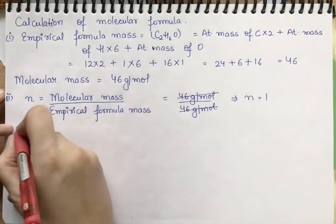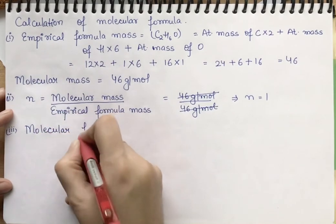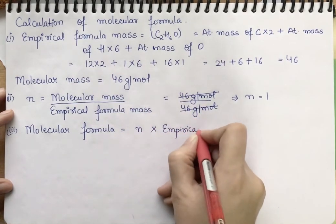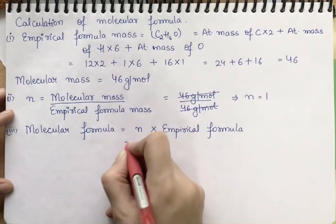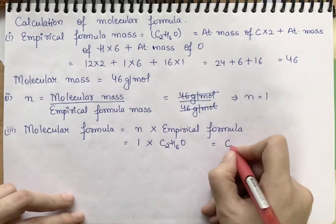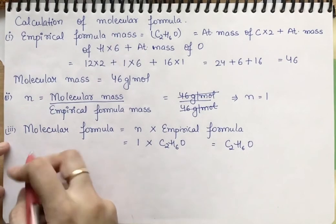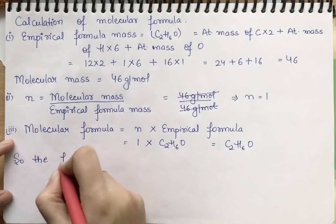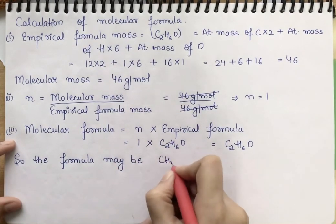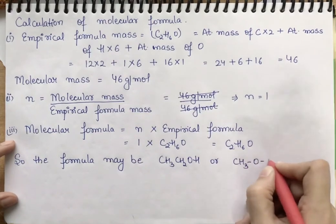Molecular formula = n × empirical formula. Since n = 1 and empirical formula is C₂H₆O, the molecular formula is also C₂H₆O. This compound might be CH₃CH₂OH (ethanol) or CH₃OCH₃ (dimethyl ether).